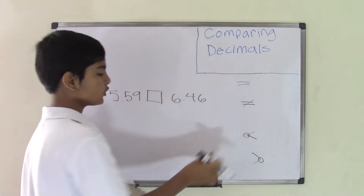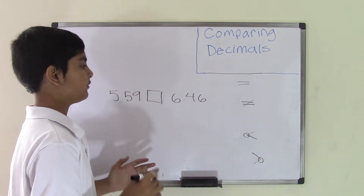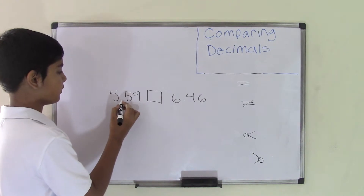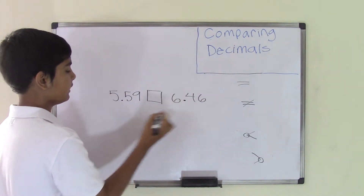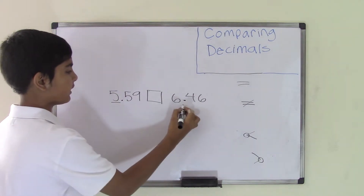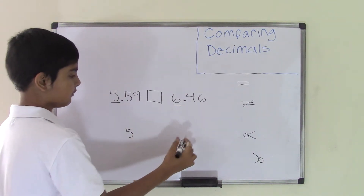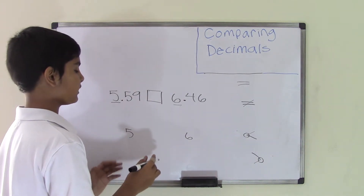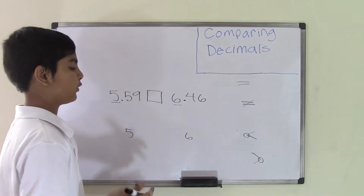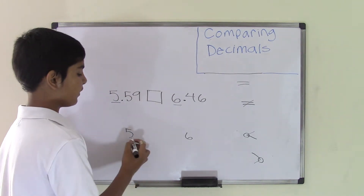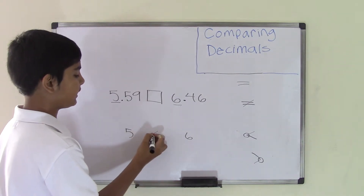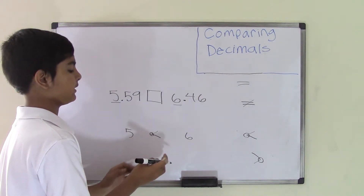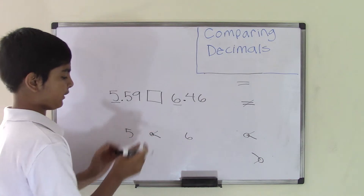To compare two decimal numbers, we start by looking at the numbers before the decimal points, which are the whole numbers. Here we have two decimal points, and the numbers before them are 5 and 6. Since these two numbers are different and not equal, 5 is less than 6, so the beak is pointing towards the 5, since 5 is the smaller number and 6 is the larger number.